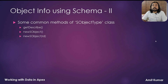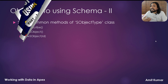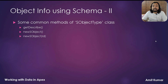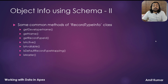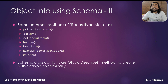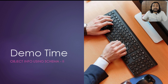Some common methods of SObjectType class are GetDescribe, NewSObject, and NewSObject using an ID as a parameter. GetDescribe was already discussed in the previous video. There is also a ChildRelationship class available in the Schema namespace, along with a RecordTypeInfo class. The Schema class contains a GetGlobalDescribe method, which we can use to create SObject type dynamically.